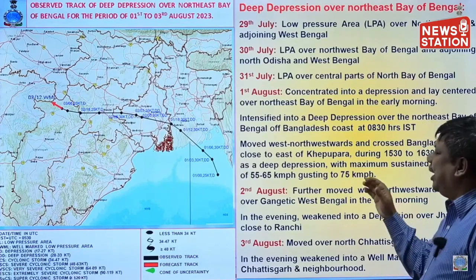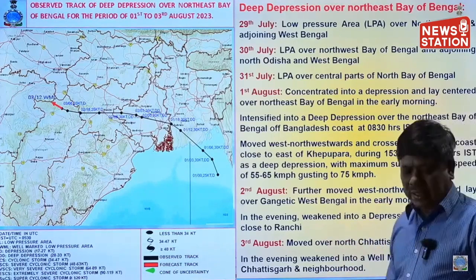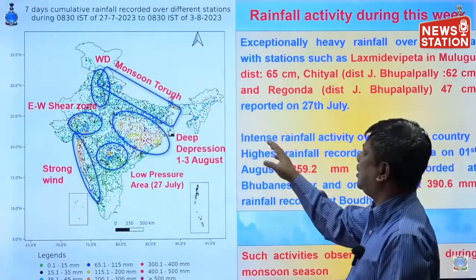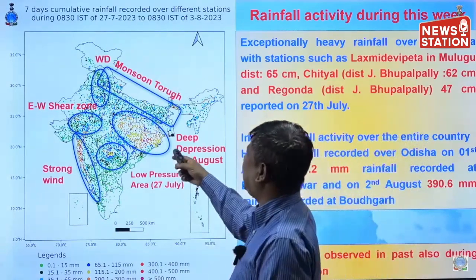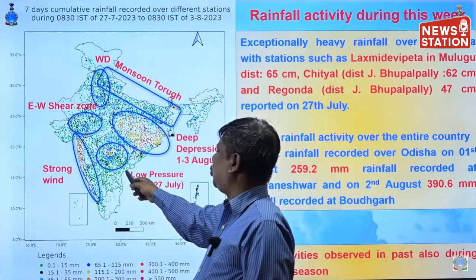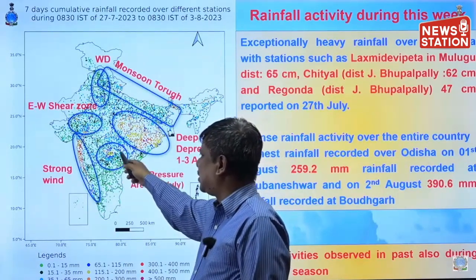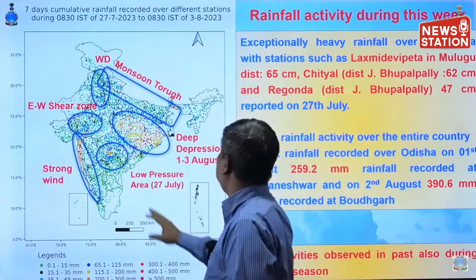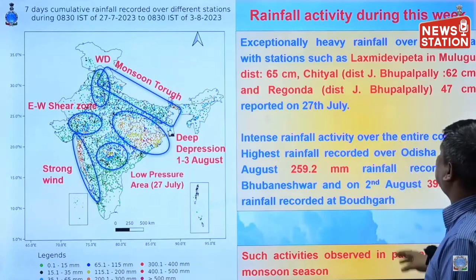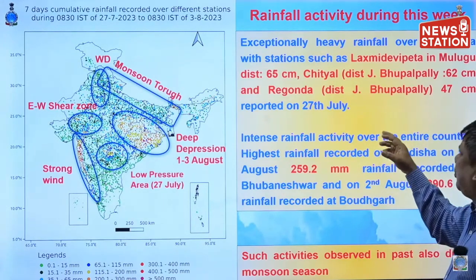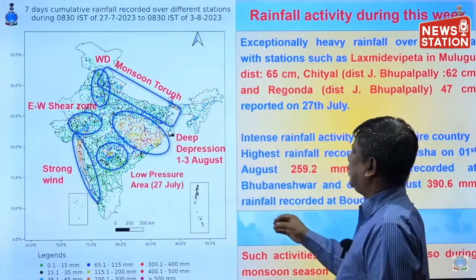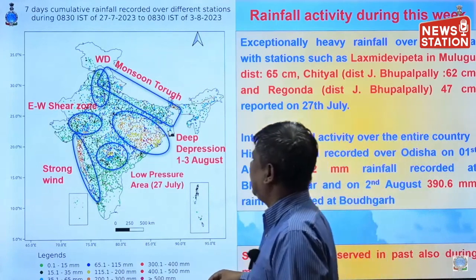Due to these weather systems, this is the rainfall scenario for the week. We can see different rainfall zones caused by different systems. The first low pressure system on 27th July with its associated cyclonic circulation caused extremely heavy rainfall over Telangana — 65 cm at Lakshmi Devi Peta, 62 cm at Chityal — so huge rainfall happened over Telangana due to that system.